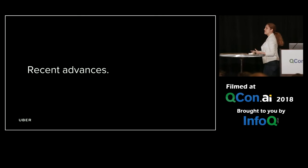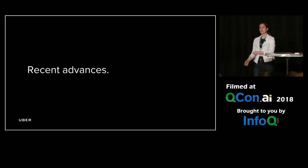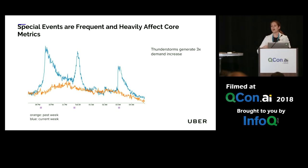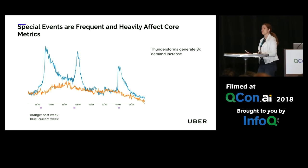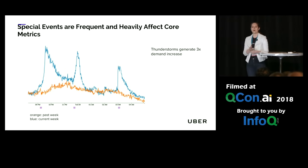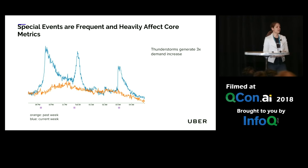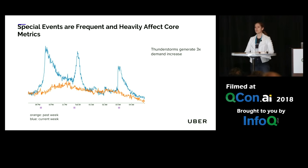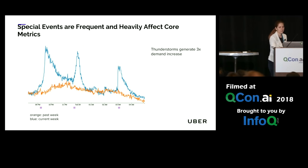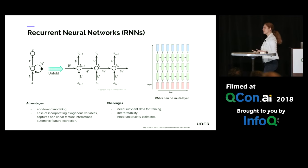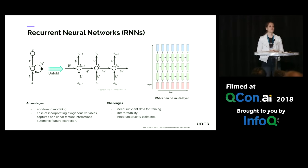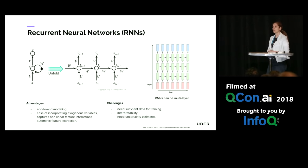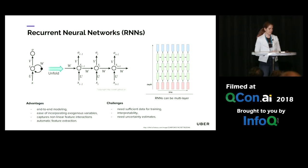Now that we've covered some of the fundamentals of forecasting, I'd like to touch briefly on some of the cutting-edge work we're doing in this domain — in particular, event forecasting at Uber. Events are extremely frequent within the Uber ecosystem: concerts, holidays, sporting events, weather — and they can have huge effects on our business metrics. Here's an example of how thunderstorms in a particular city cause 3X demand. The problem with classical statistical approaches is that adding exogenous variables is often not possible. One exception is ARIMA, but even there we find it does not work very well.